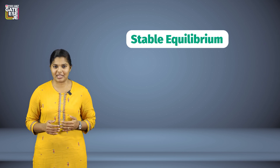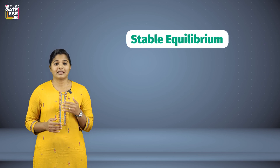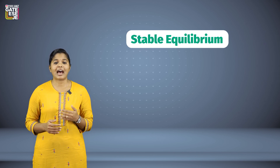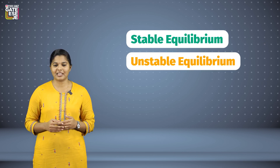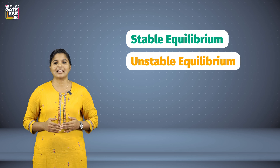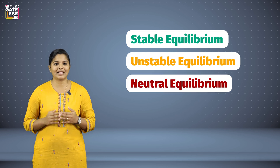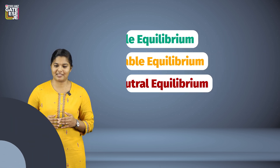For a submerged body, there are three equilibrium conditions. The first one is stable equilibrium condition, the second one is unstable equilibrium condition, and the third one is neutral equilibrium condition.